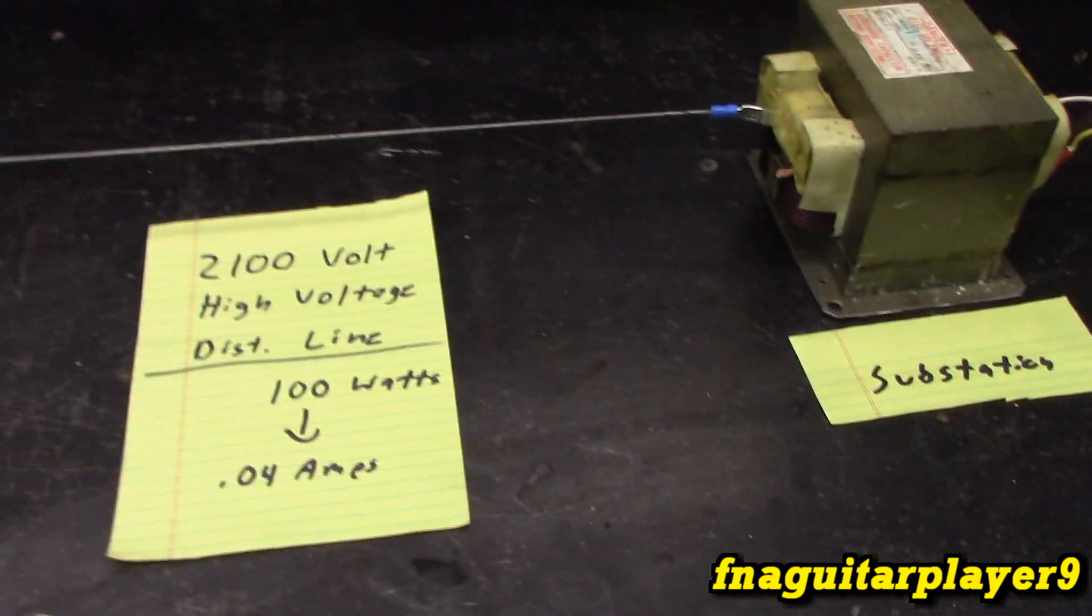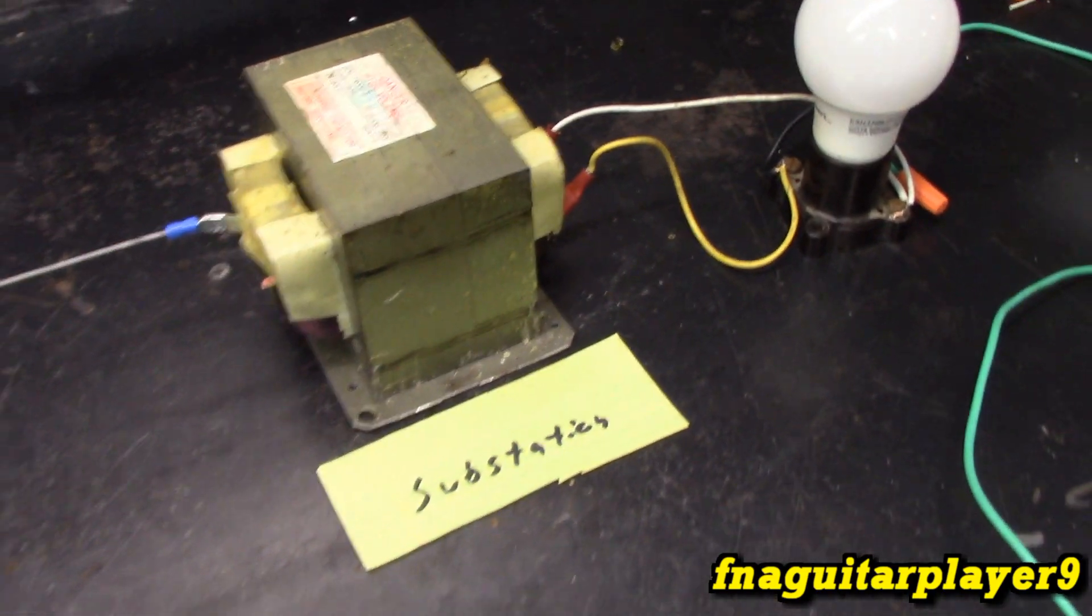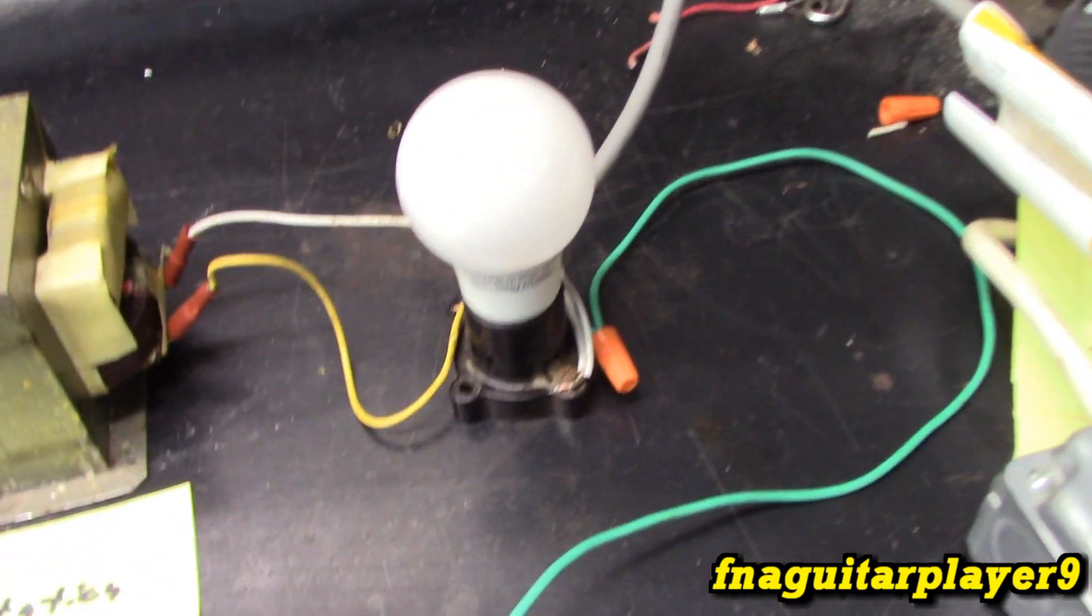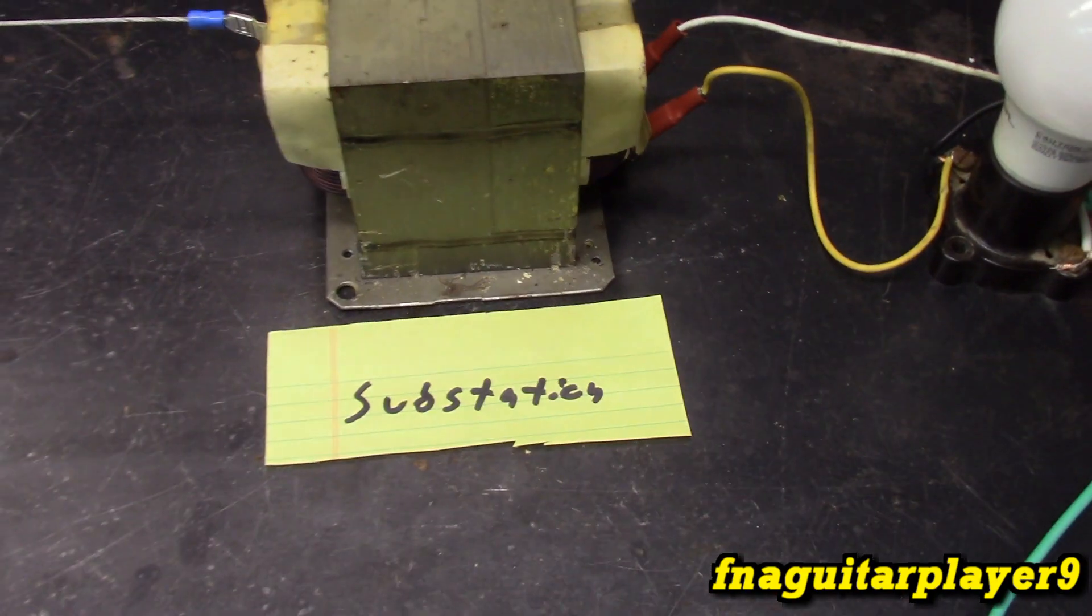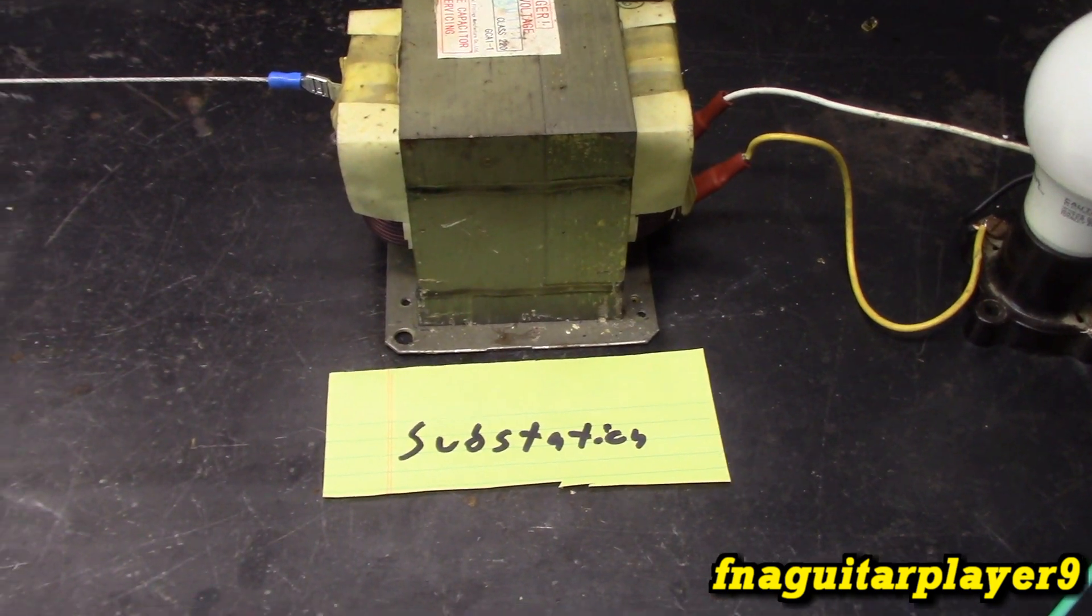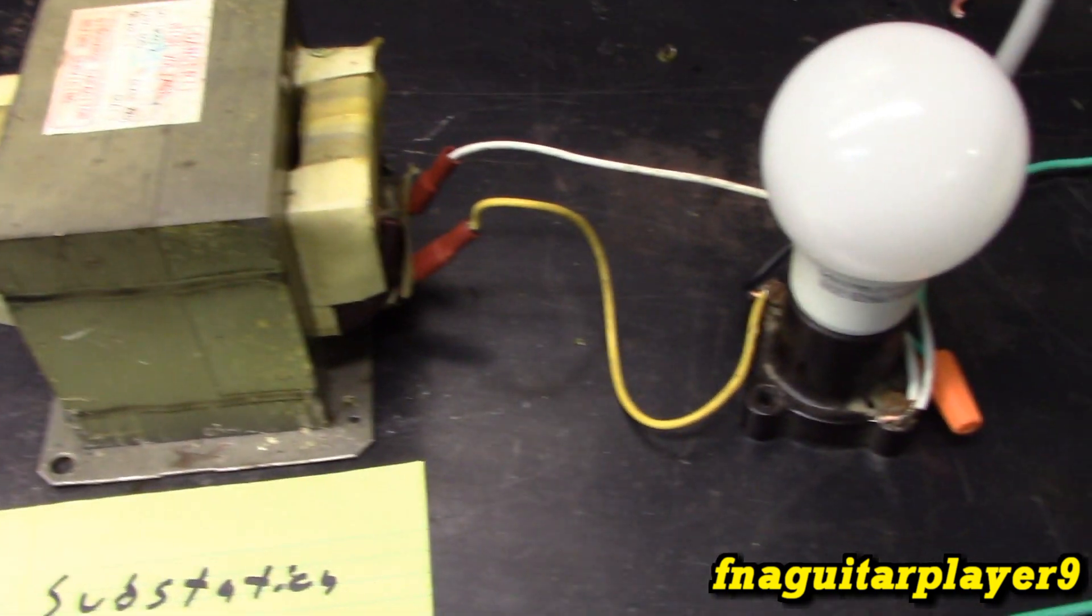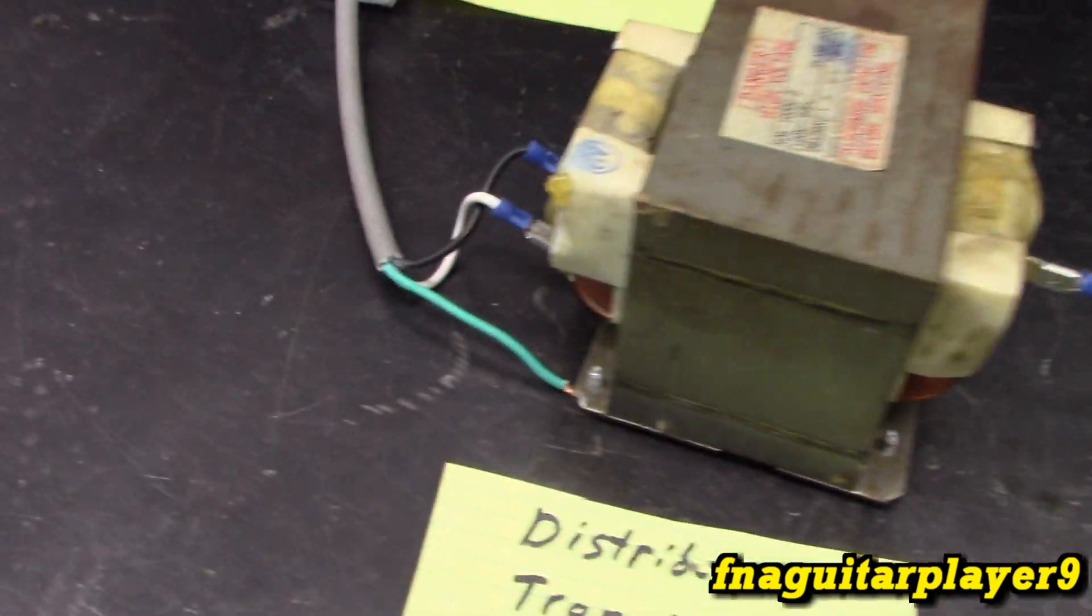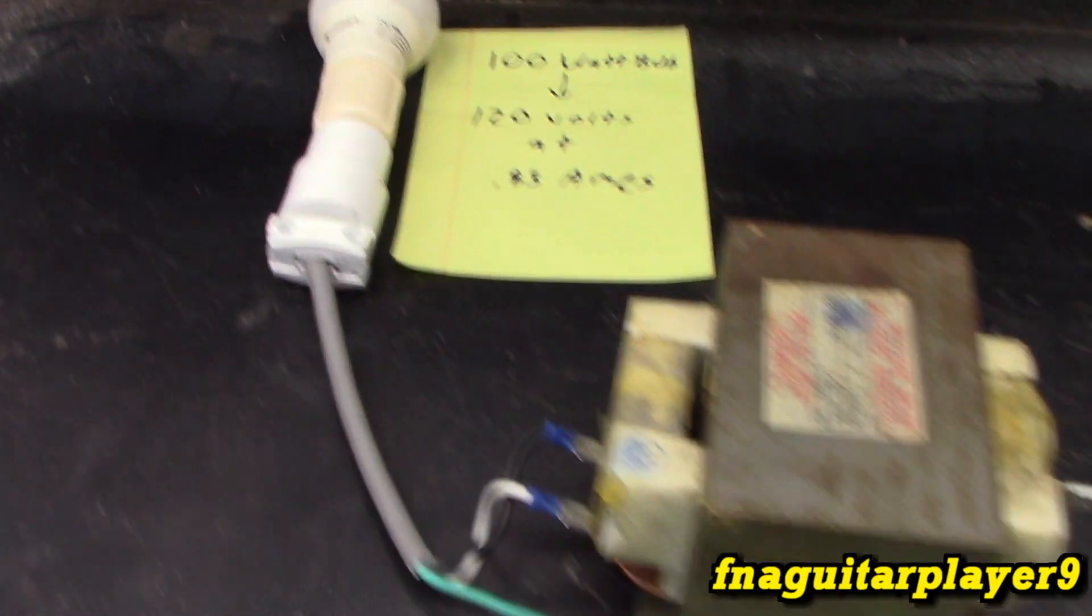So in this example, the substation is actually a step up transformer. So this would be more accurate as a generator feeding directly into this distribution substation. So this takes 120 volts up to 2100 volts. Then transforms it back down to 120 to feed to your house.